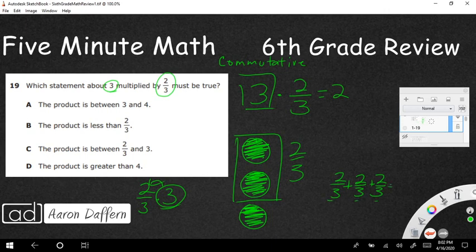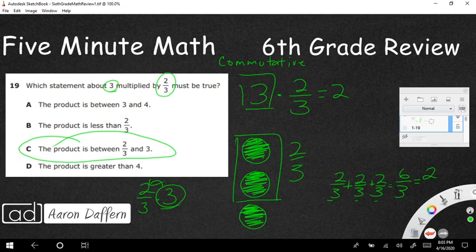If you add all those together, you're going to get six-thirds and six divided by three is two. So looking at it either way, whether you want to say two-thirds of three or three times two-thirds, our answer is going to be C. It's going to be between two-thirds and three.